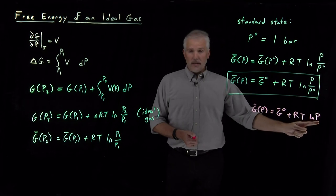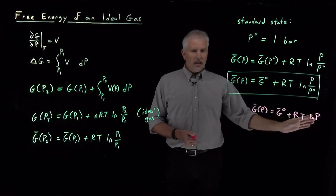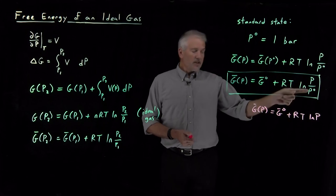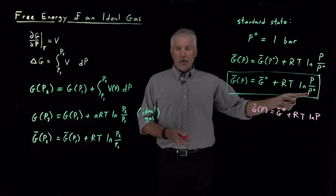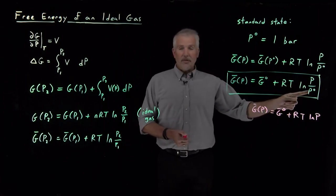So the telltale sign that we've made a mistake here is the natural log is being taken of some quantity with units on it. If you ever find yourself taking the natural log of a quantity with units, then something has gone wrong. Possibly something as benign as forgetting to divide by 1 or forgetting to write down that you're dividing by 1.